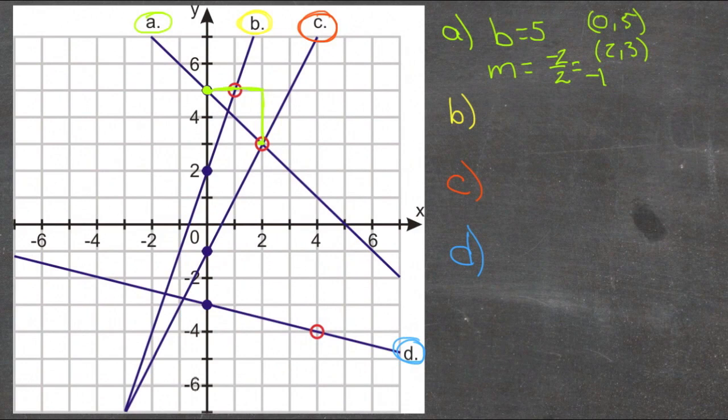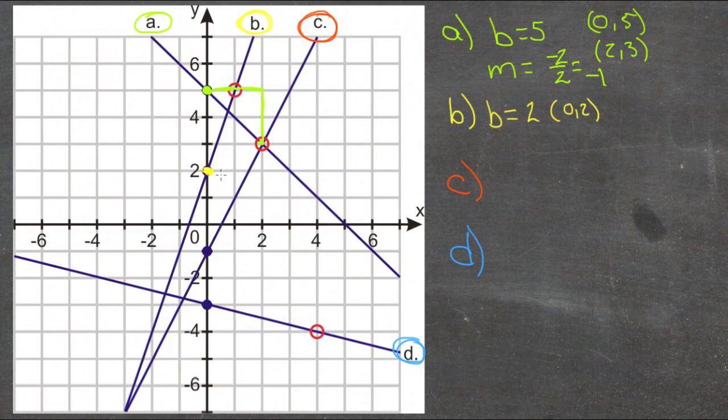So then for line b, we have our y-intercept down here. And it's at (0,2). So b is 2. And the coordinate is (0,2). And we can see another marked point up here. And that point then is (1,5). So we have a point at (1,5).